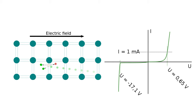Avalanche photodiodes require electric fields generated with very high reverse voltages in the range of 5 to 10 volts, much larger than the ones in normal photodiodes.